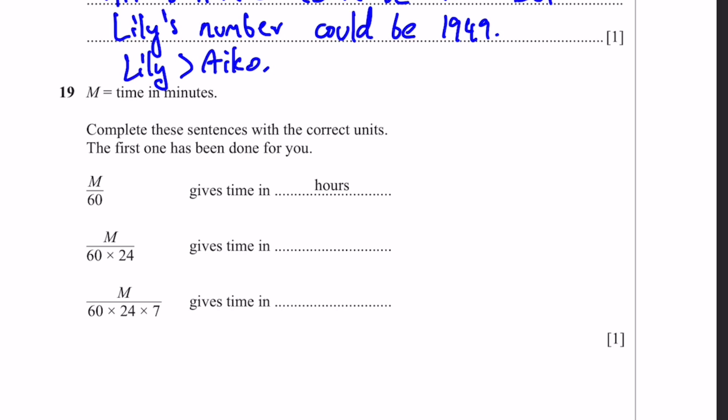Question 19. M equals time in minutes. Complete the sentences with the correct units. M by 60 gives time in hours. M by 1,440 gives time in days, because there's 24 hours in one day. M by 1,440 into 7 gives time in weeks. That's the answer.